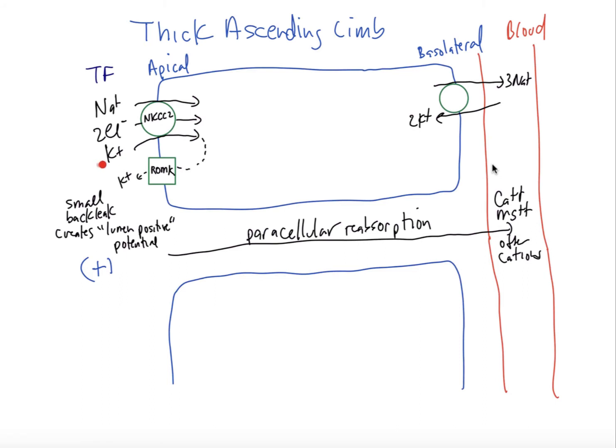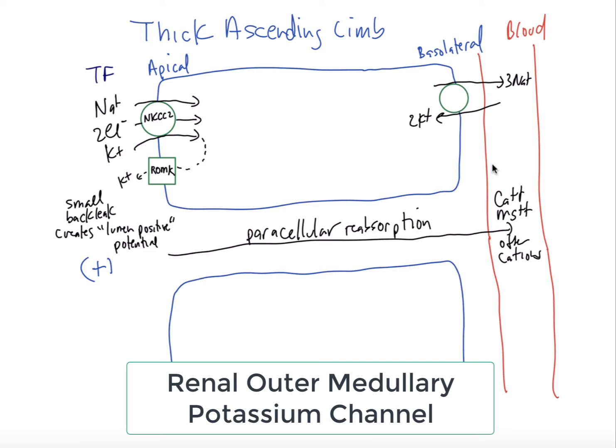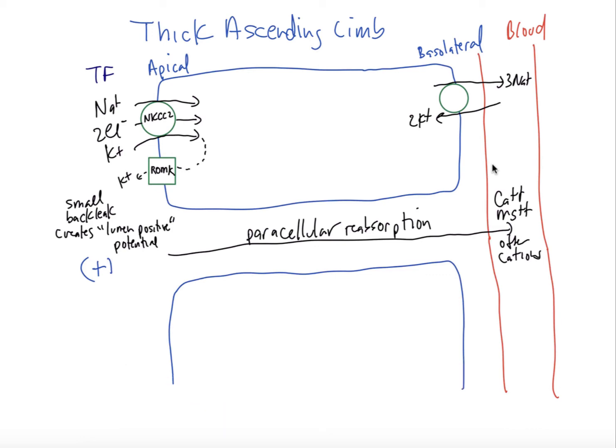And if we look first on this apical side at the transporter NKCC2 which is facing the tubular fluid here, that's the sodium 2 chloride potassium triple co-transporter. As these ions come in in electroneutral fashion, that is two cations and two anions, they are going to be reabsorbed back into the blood through the backside transporters not shown. But there's also a channel here on the apical membrane called ROMK. This stands for renal outer medullary potassium channel. And this does a little tiny bit of potassium secretion and this cycles around. But as it does that, it creates a small positive lumen potential and that positive charge repels cations, primarily these divalent cations which are really repelled by it like calcium and magnesium. But also sodium and potassium can get reabsorbed in between the cells and we call that paracellular reabsorption.